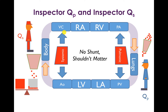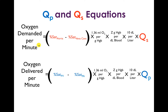So what if there is a shunt? Well, then it does matter. We introduce two figures: Inspector QP, looking at the pulmonic changes in oxygen saturation, and Inspector QS, looking at the oxygen saturation changes in the body. Taking that same equation, instead of just flow, we talk about systemic flow or pulmonary flow, and we put in the respective oxygen saturation difference. For systemic flow, that's the difference between saturation in the aorta and the vena cava; for pulmonic flow, it's the saturation difference between the pulmonary vein and the pulmonary artery.